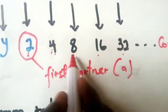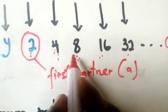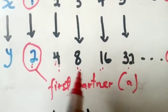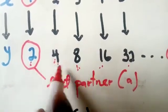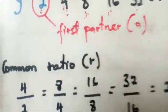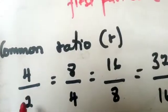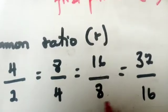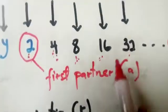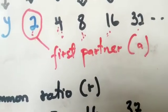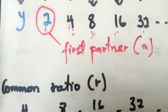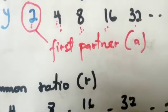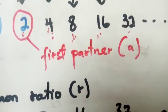To find the common ratio, you divide each term by the previous one — for example, 4 over 2, then 8 over 4, then 16 over 8, and so on. The key requirement is that all these divisions must give the same answer. If they are not the same, then this is not an exponential mapping.